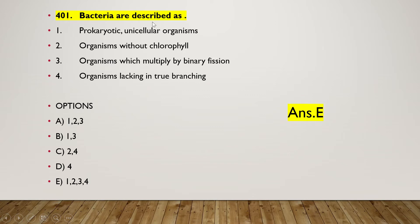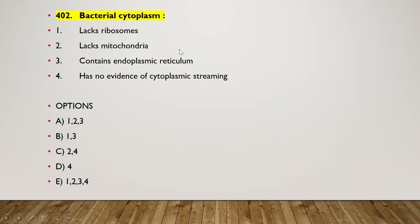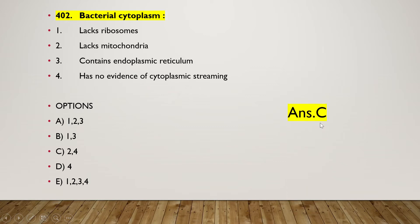Next question: bacterial cytoplasm — (1) lacks ribosomes, (2) lacks mitochondria, (3) contains endoplasmic reticulum, (4) has no evidence of cytoplasmic streaming. The right answer is option C — that means option two and option four is the correct answer.